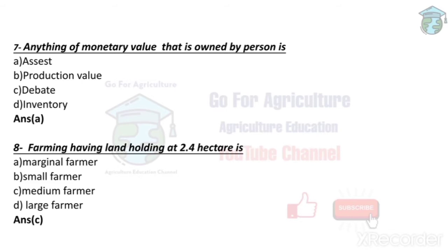Farmers having a land holding of 2.4 hectares is called a medium farmer. Medium farmers have land holdings between 2 to 5 hectares. Marginal farmers have around 0.3 to 1 hectare, small farmers have 1 to 2 hectares, and large farmers have more than 10 to 15 hectares. So a 2.4 hectare land holding falls in the medium farmer category.